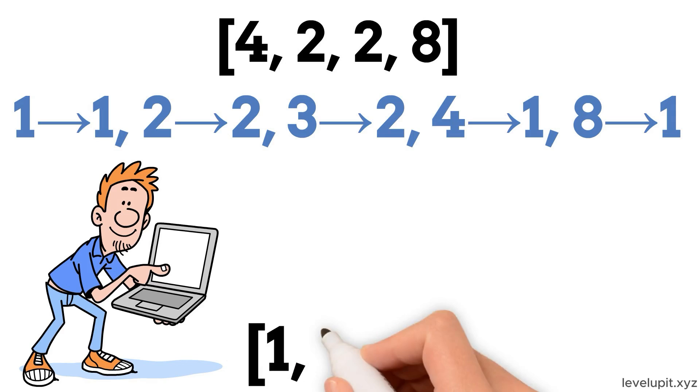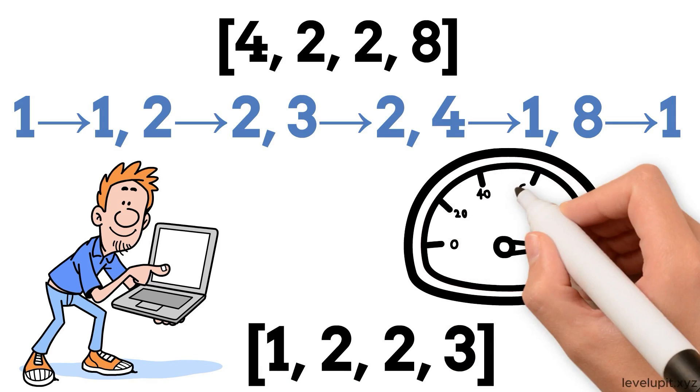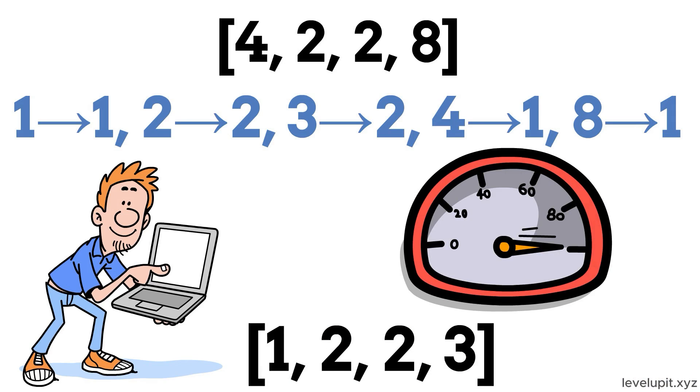Then we reconstruct the sorted list by writing out each number as many times as it occurred, to get 1, 2, 2, 3, 3, 4, 8. It is very fast for limited ranges and is used inside other algorithms.